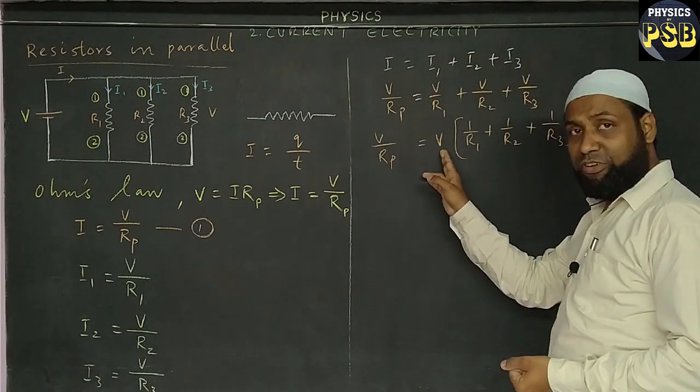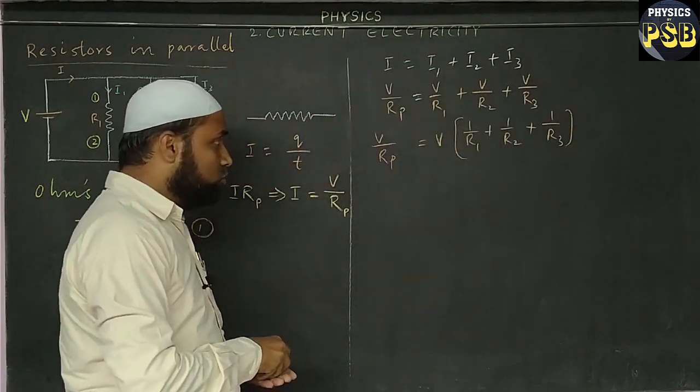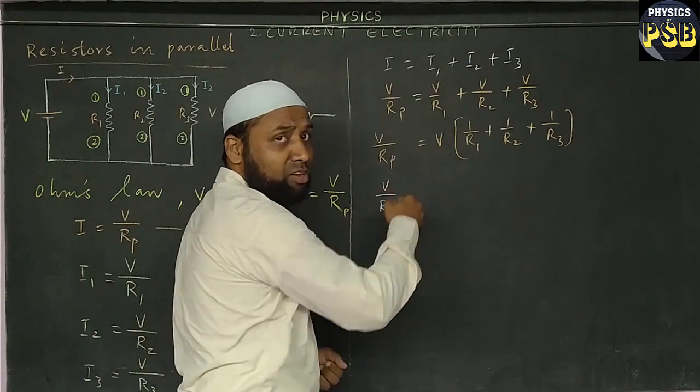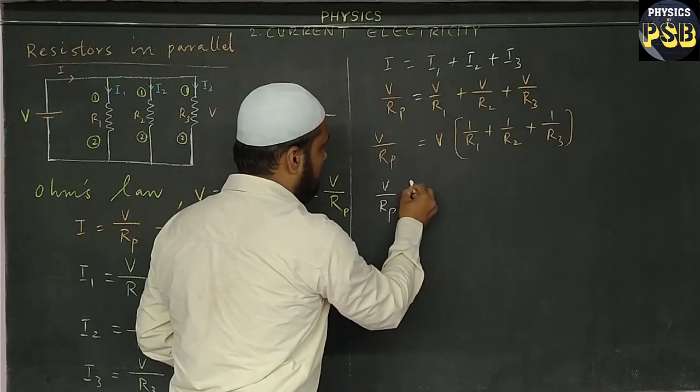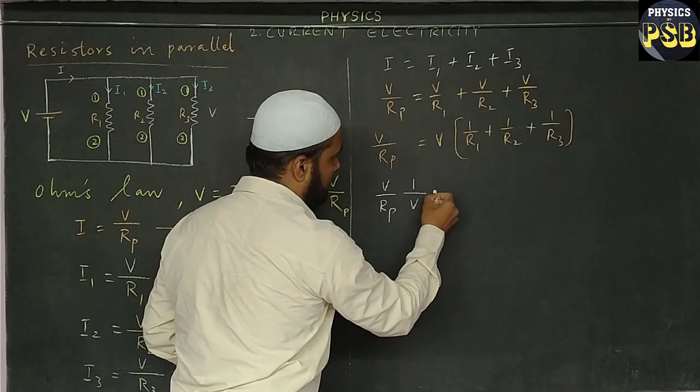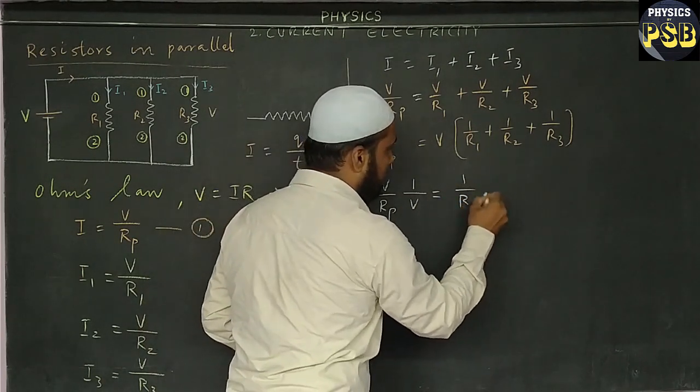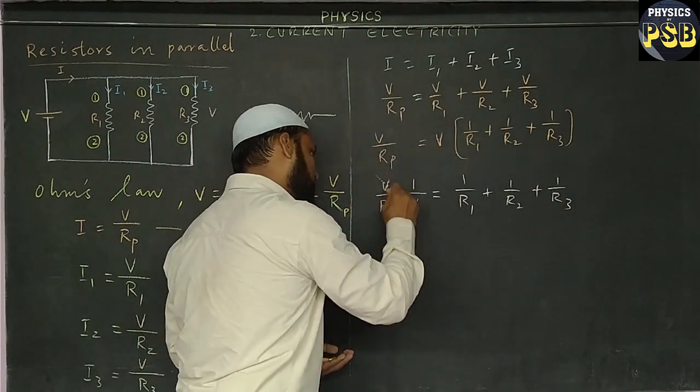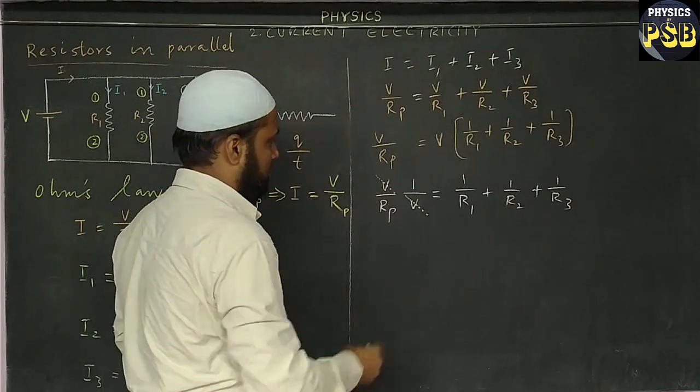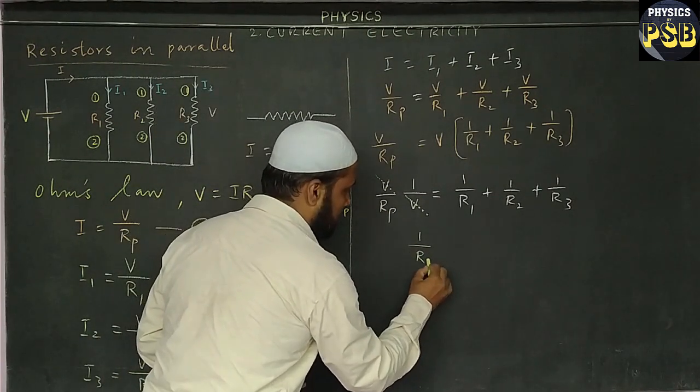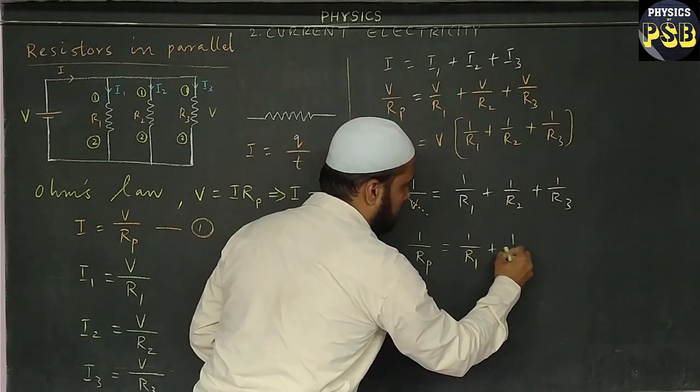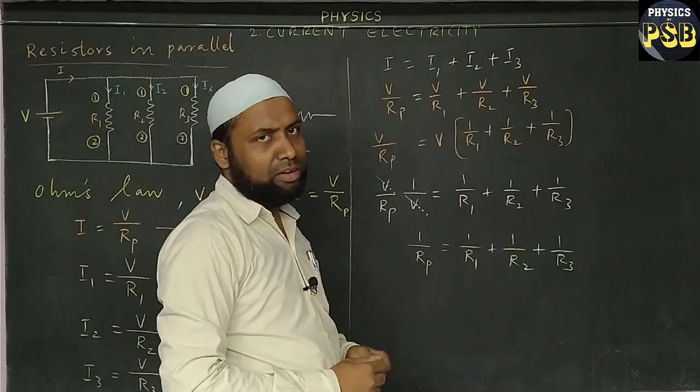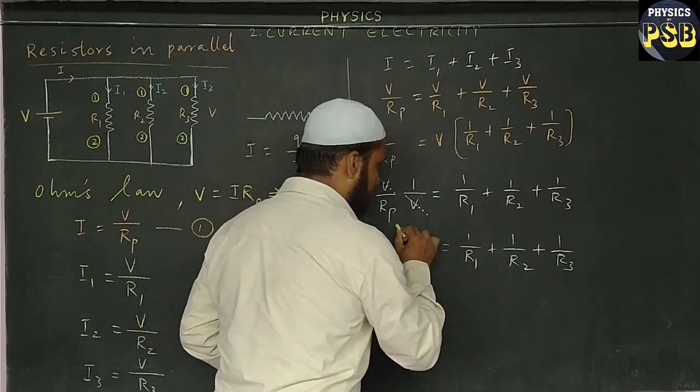Then I take V to the left-hand side. When I do so, what is multiplying here will come to denominator: V. This side: 1 upon R1 plus 1 upon R2 plus 1 upon R3. Here this V and this get cancelled. We obtain the final equation. This is the final equation. Now I box this.